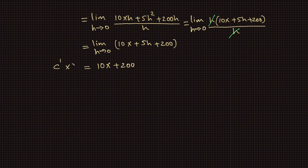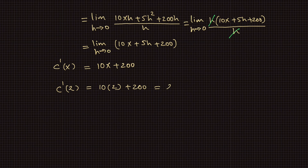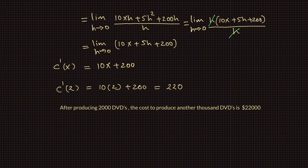This is the derivative c prime of x. We want to find the derivative at x equals 2, which means c prime of 2 is equal to 10 times 2 plus 200, which is equal to 220. This means after producing 2,000 DVDs, the cost to produce another 1,000 DVDs is $22,000.